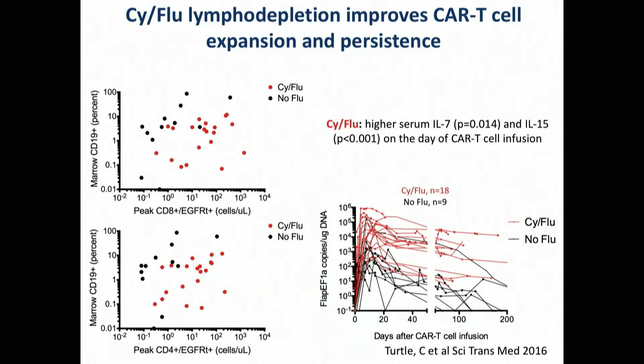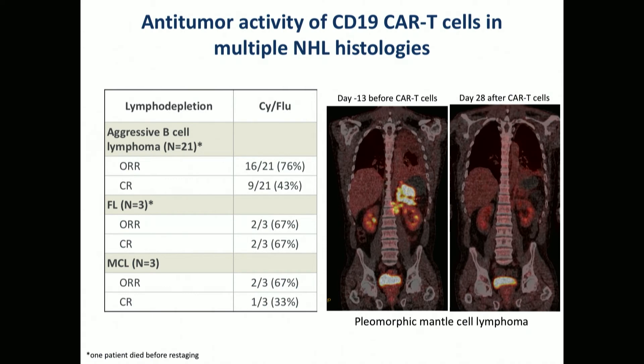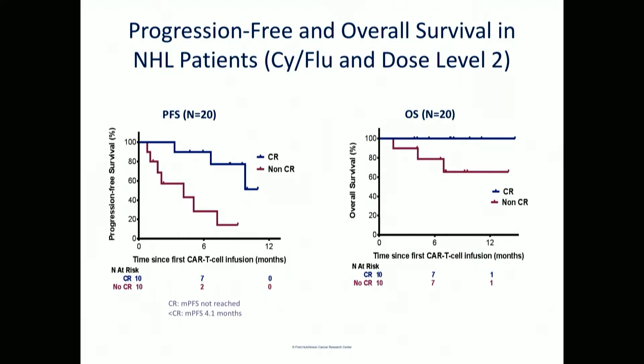This leads to longer persistence of the T-cells, longer duration of remission, and better responses. We had about a 70–80% overall response rate and about 40% complete remission rate in a variety of lymphomas. Here's a pleomorphic mantle cell lymphoma that had relapsed after an allogeneic stem cell transplant — this patient is in remission over three years after a single infusion of CAR T-cells, without any increase in GVHD. The CLL paper just came out in JCO looking at about 24 patients with ibrutinib-refractory CLL.